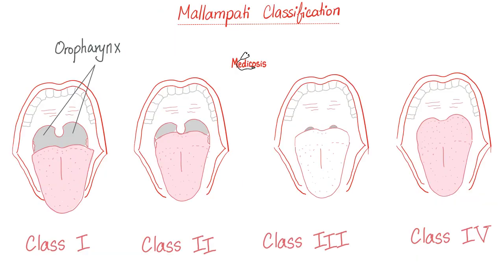Is there a way to predict if this patient will be easy or difficult to intubate? We have two classification systems. The first is the Mallampati classification — we look at the oropharyngeal opening. In class 1, it's wide open. Class 2, getting narrower. Class 3, even narrower. Class 4, you can't even see it — that's not good. The next system is the Cormack-Lehane classification — here we look at the patient's vocal cords and the vocal cord aperture, looking through the larynx and into the trachea. In grade 1, everything is wide open. Then grade 2 gets narrower and narrower until you can't even see the opening.